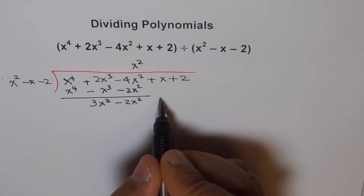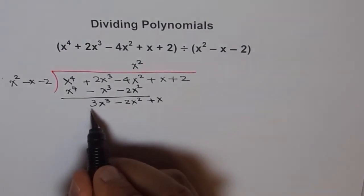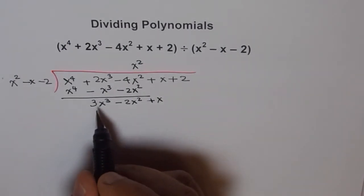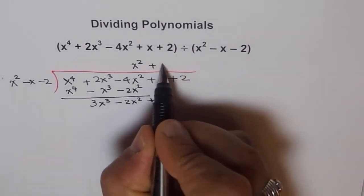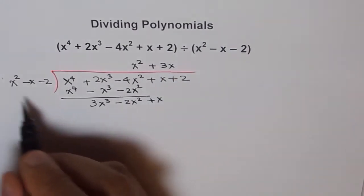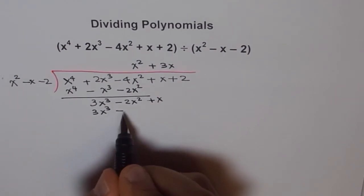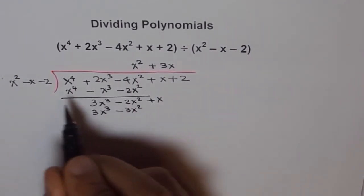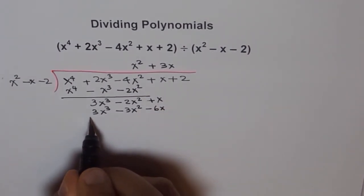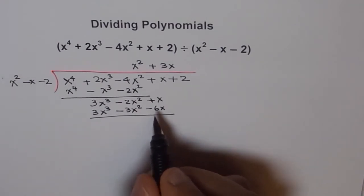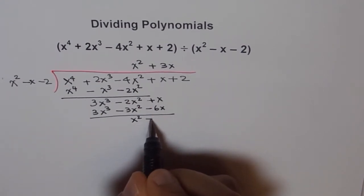Now we have to bring the fourth term down — plus x. We will multiply by 3x so that we get 3x cubed when multiplied with x squared, giving plus 3x in the quotient. So we get 3x cubed, then minus 3x squared and minus 6x. We take away this as well, and we get x squared and this becomes plus 7x.